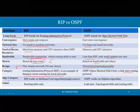For the algorithm category, RIP works on the Bellman-Ford algorithm, which is a single shortest path algorithm. OSPF works on Dijkstra's algorithm for the calculation of the shortest path, where the minimum cost path is calculated.